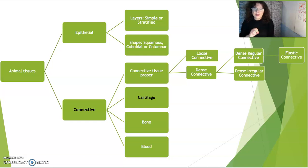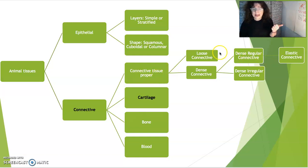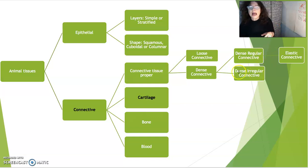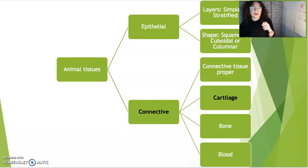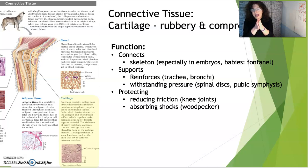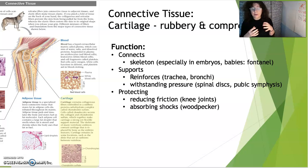Hi everyone. We are on to our second connective tissue, and that connective tissue is cartilage. We've already been through connective tissue proper — loose connective tissue, dense connective tissue, dense regular connective, and dense irregular connective. Now we're on to cartilage, a tissue that has a function of connecting the skeleton, especially in vertebrate embryos and in human babies.